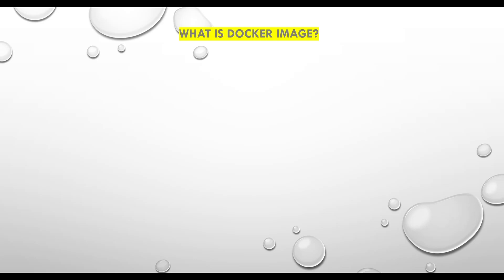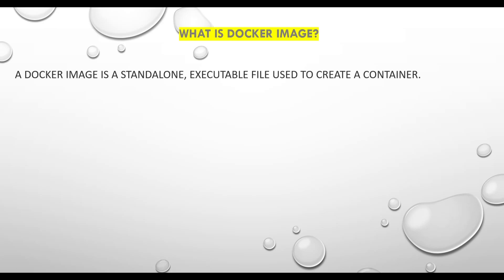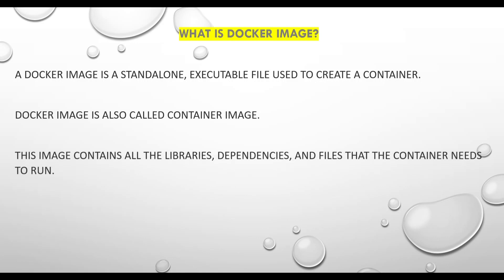First, we will quickly understand what is a Docker image. A Docker image is a standalone executable file used to create a container. Docker image is also called container image — they are the same thing. This image contains all the libraries, dependencies and files that the container needs to run. So in order for a container to run, we need to create an image that will contain all the libraries and all the dependent files.